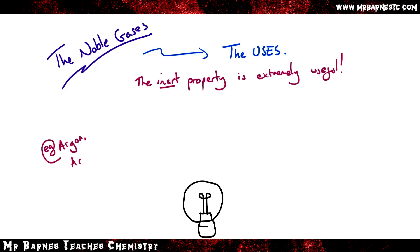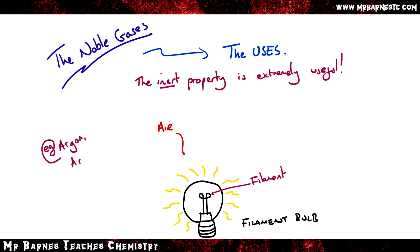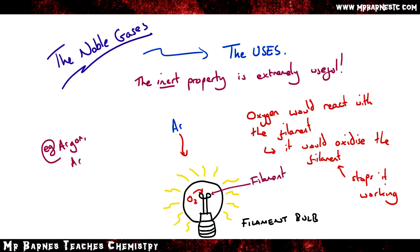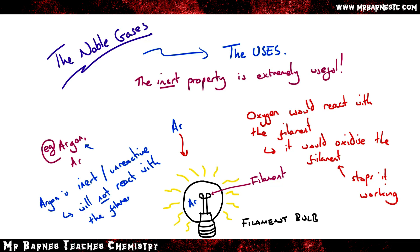So if we start off with argon, which is used in filament light bulbs — you can see here this is where the filament is — if you were to just use air in the bulb, which has oxygen in it, the oxygen would react with the filament, oxidize it, and stop the actual bulb from working. So instead we use argon. Because argon is inert and unreactive, it does not react with the filament, so it won't oxidize and therefore it won't break.